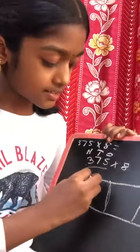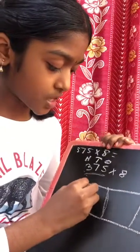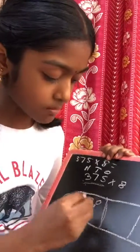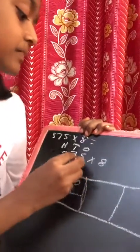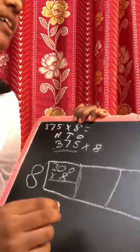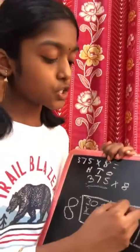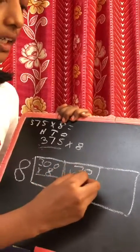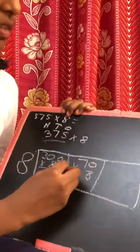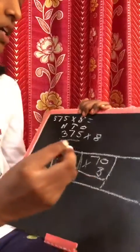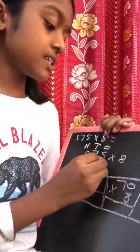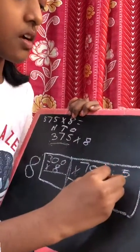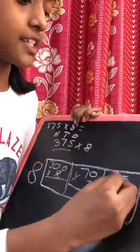So do 300 times 8. Then 7 is in the 10's place, so do 70 into 8. And 5 is in the 1's place, so do 5 times 8.